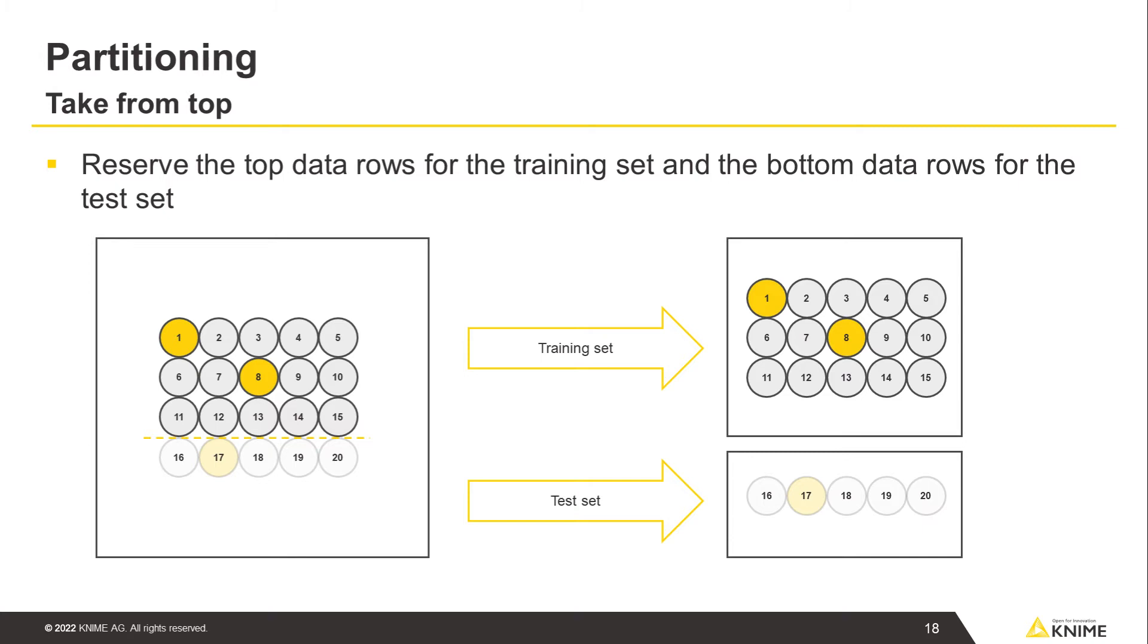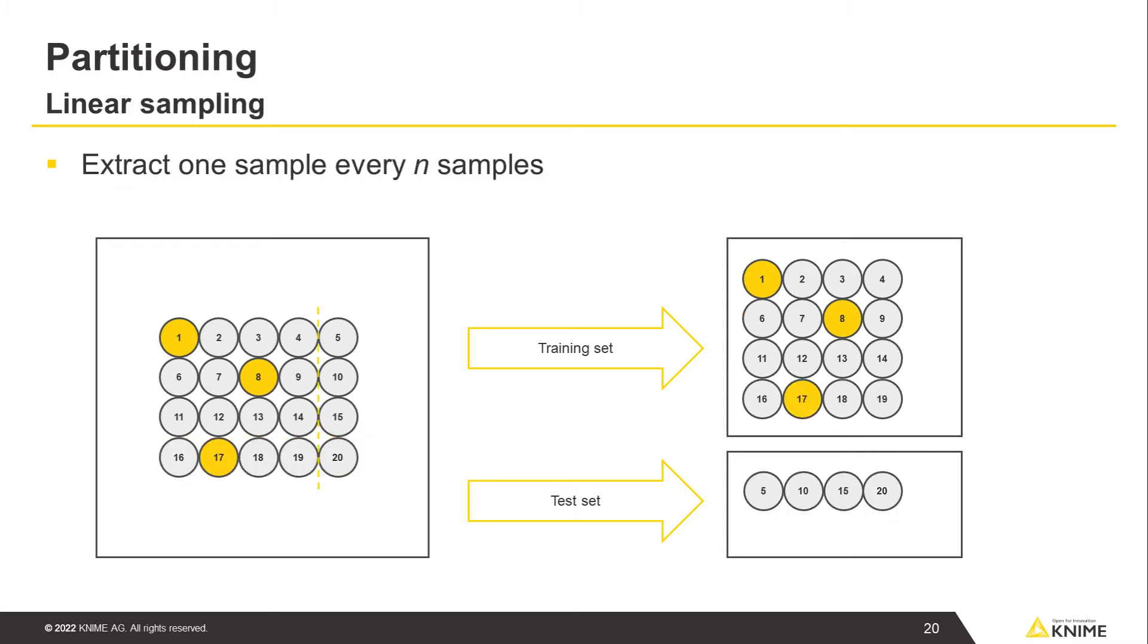Note that it shouldn't be used with classification or regression models because random sampling guarantees the presence of all types of samples in both sets. Linear sampling extracts one sample for every n samples. It is not random. Instead, it aims at creating subsets that contain all types of samples from the original data.